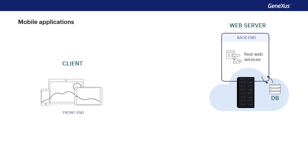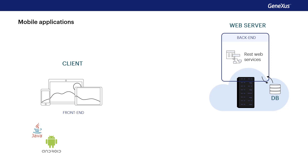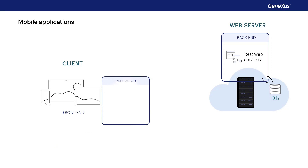A mobile application also has a part that runs on the client — in this case, the mobile device — and also a part that runs on the server, which provides information to the client. Each mobile platform has its own language: Java for Android and Swift for iOS. When compiled, the application is installed on the device. This file will contain all the business logic and also the application metadata that includes everything needed to implement the user interface and other resources, such as the URLs of each required API.